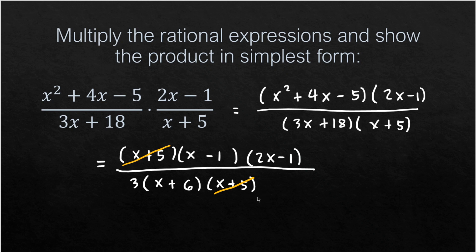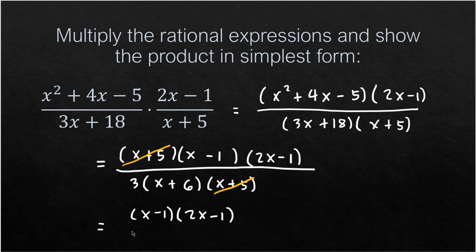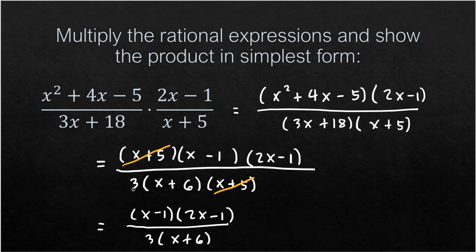After canceling (x+5), the simplified form is (x-1)(2x-1) all over 3(x+6).